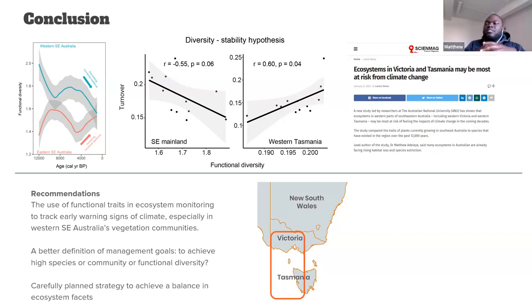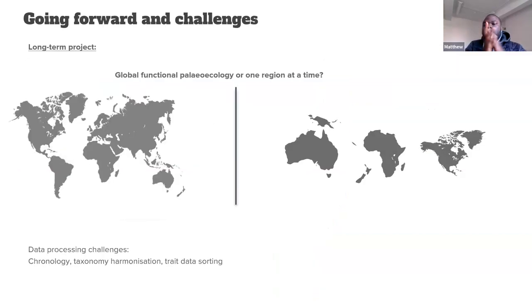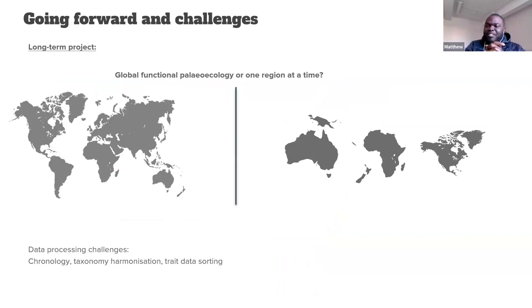It's really important to put our findings into perspective before making judgments in terms of policies and management strategies. The next stage involves discussing with colleagues to take this work further — either doing the functional paleoecology analysis using global pollen datasets and plant traits, but the data processing challenges at a large spatial scale are considerable. So we're currently leaning towards taking each region a step at a time, and then building from there. I'll stop there — thank you.